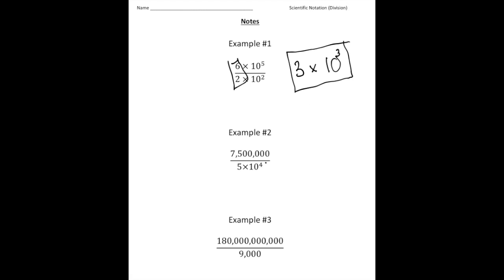Alright, now the second problem, we have 7,500,000 divided by 5 times 10 to the 4th. And notice the numerator is not written in scientific notation. So I'm going to transform that to 7.5 times 10 to the,